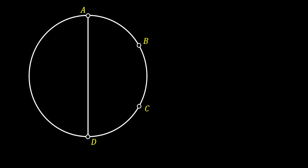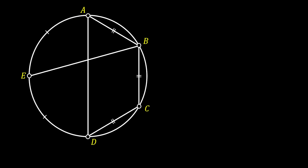Before we start solving this problem, I will first try to replicate it to the best of my abilities. We basically start with a circle and we will draw the vertical diameter of this circle and label it as AD. Next, on the right part of the arc of our circle, we will insert two points B and C in such a way so that the lines AB, BC, and CD are equal.